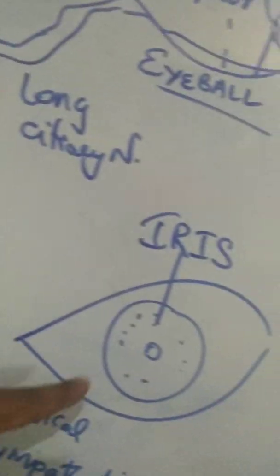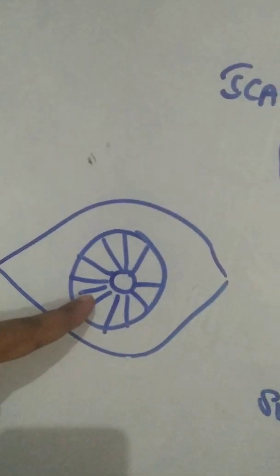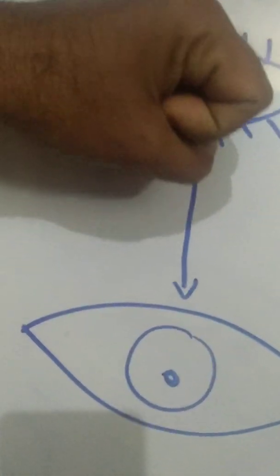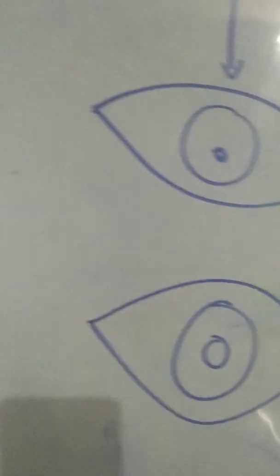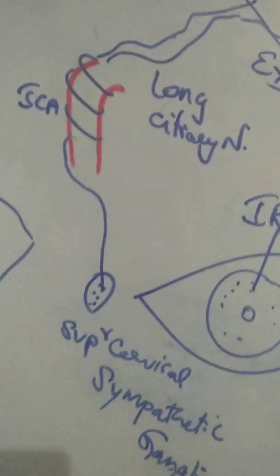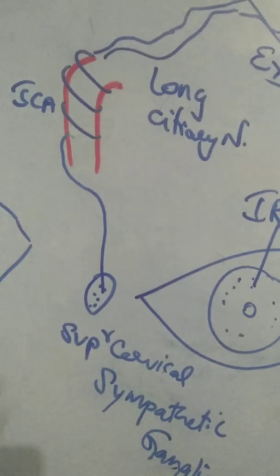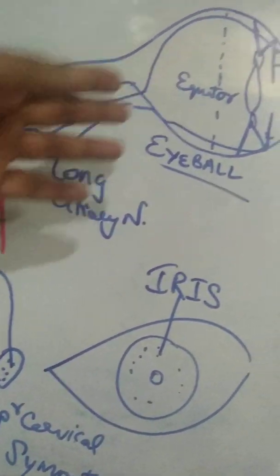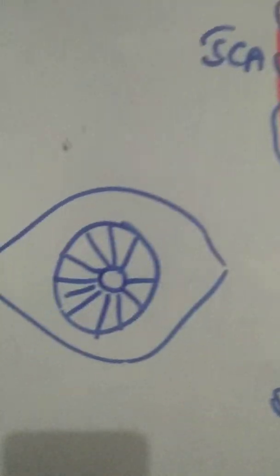In summary: dilator pupillae location is within the iris diaphragm. Origin is from the periphery of the iris; insertion is to the pupillary margin at the center of the iris. Action: it causes dilatation of the pupil from the neutral position. For nerve supply: superior cervical sympathetic ganglia → post-ganglionic fibers form a peri-arterial sympathetic plexus around the internal carotid artery → long ciliary nerves → pierce the sclera → pass beneath the sclera → reach the iris → supply the dilator pupillae.